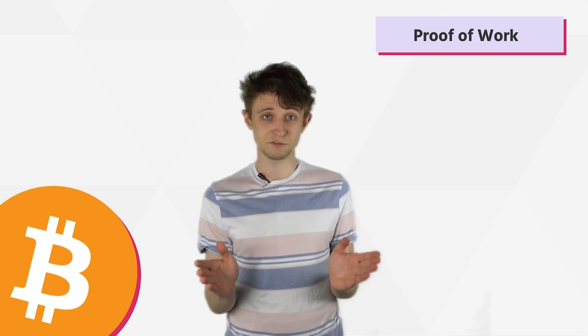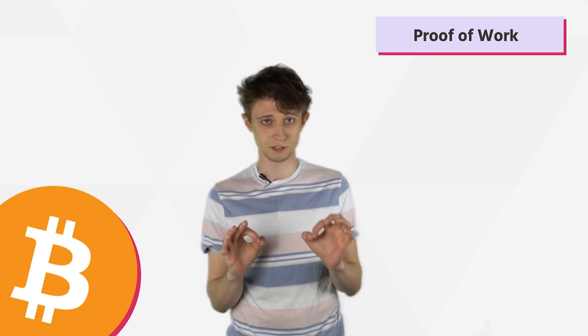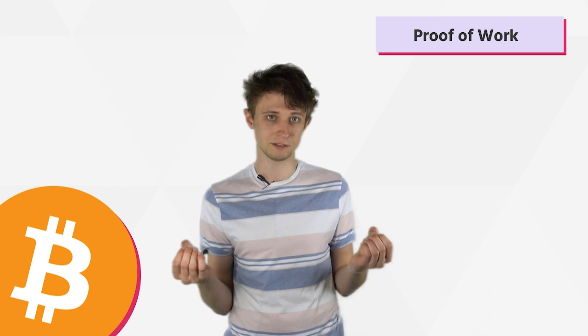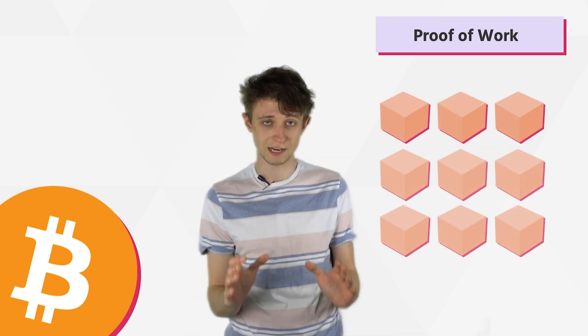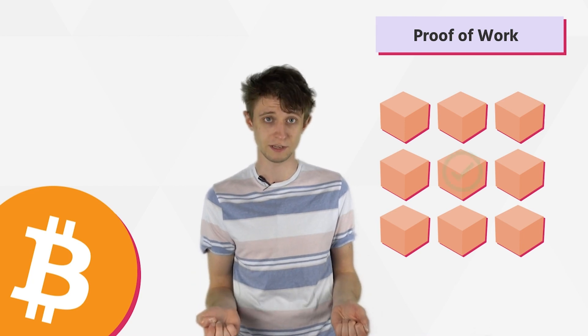This is what's known as a 51% attack and it plagues many of the smaller cryptocurrencies which make use of the same proof of work algorithm. If you've ever sent Bitcoin between exchanges, you'll know that it takes multiple blocks to be mined before you can actually access your funds. And this is done as a safety measure against these kinds of attacks.